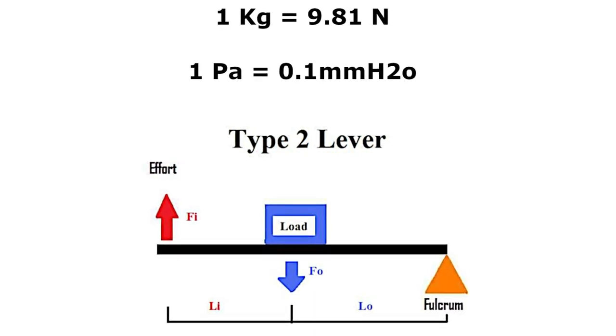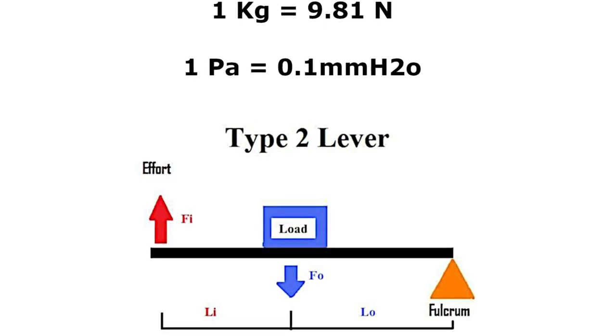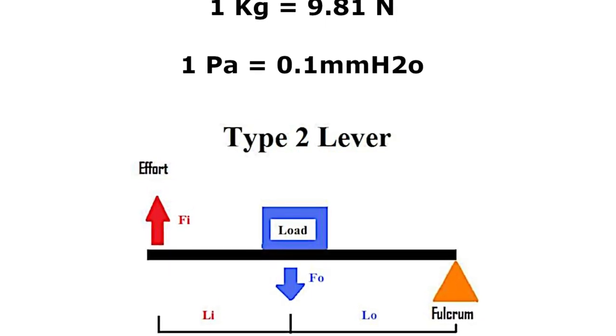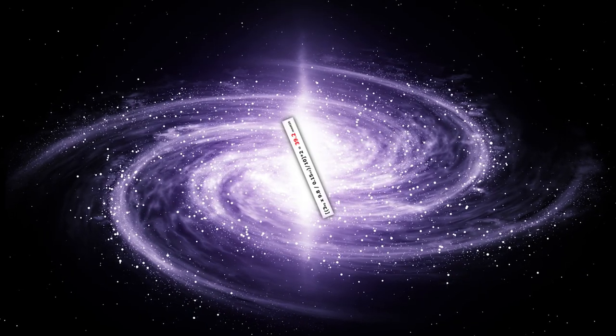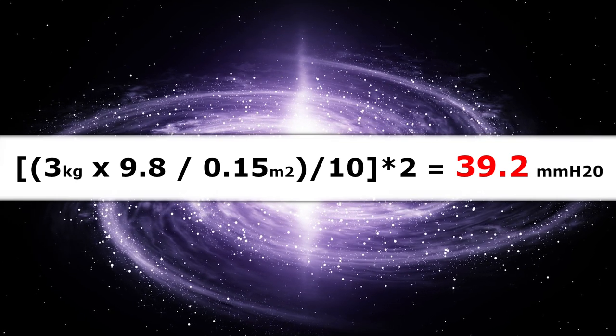We also consider that the wedge is a lever of the second type, and for how it's configured, the bellows has a gain of 2. Here is our magic formula. Ok, I'll explain it to you.